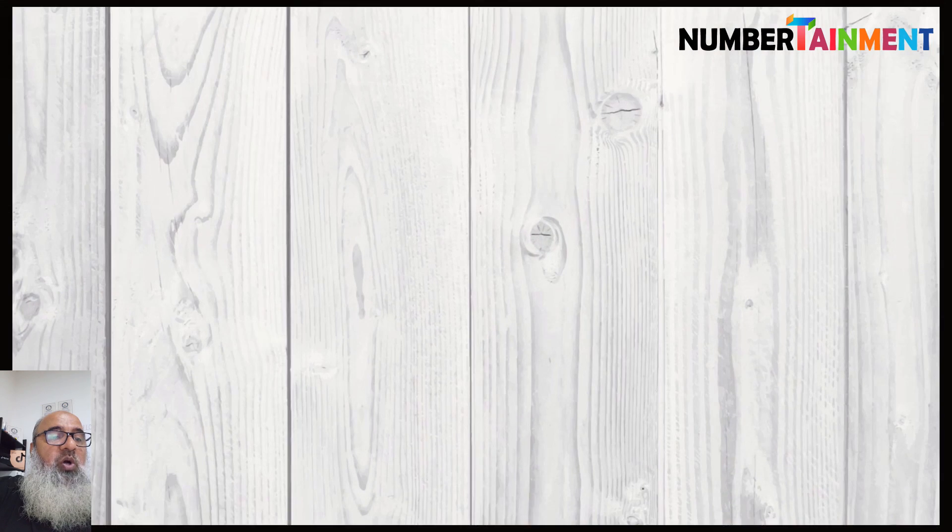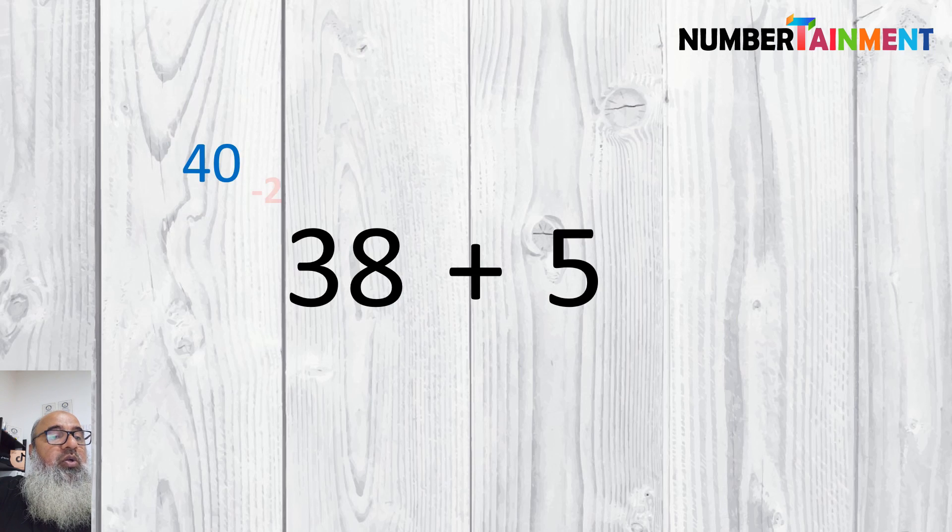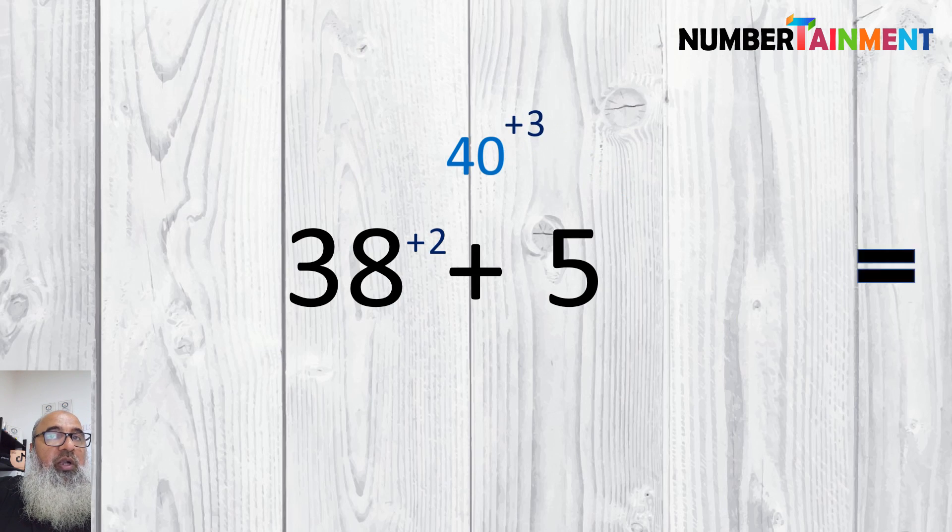Suppose we want 38 plus 5. We know that 38 is close to 40 and is 2 below it. So we take 2 of 5 to make up to 40 and we have 3 more to add which gives 43.